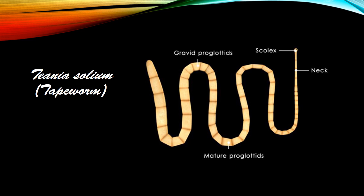These body segments are then the mature proglottids, and fertilization occurs in them. Gametes fuse to form zygotes which further develop to form onchospheres. During this development, the body segments grow enormously in size and all parts except the uterus degenerate. The uterus becomes highly branched and full of countless onchospheres. Such body segments are called gravid proglottids.